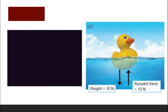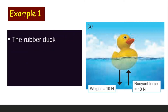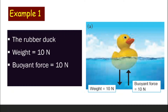Let's look at some examples to help you understand. In example one, you can see this rubber duck. Let's say the rubber duck has a weight of 10 N and the buoyant force acting on it is also 10 N. That means the buoyant force is enough to support the weight of the duck, and hence the rubber duck will float.